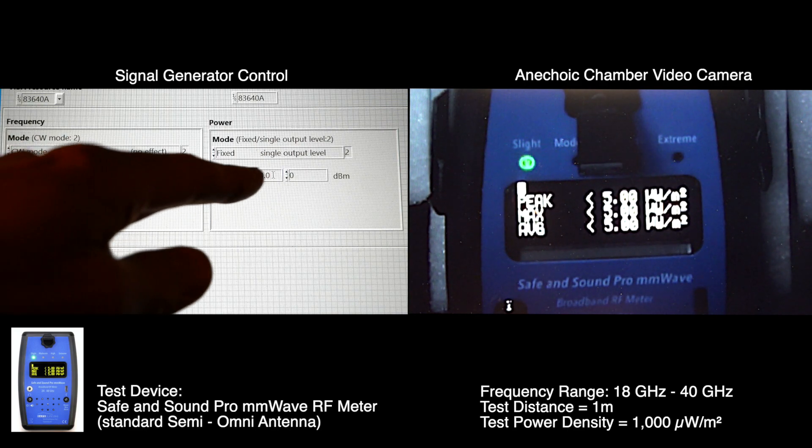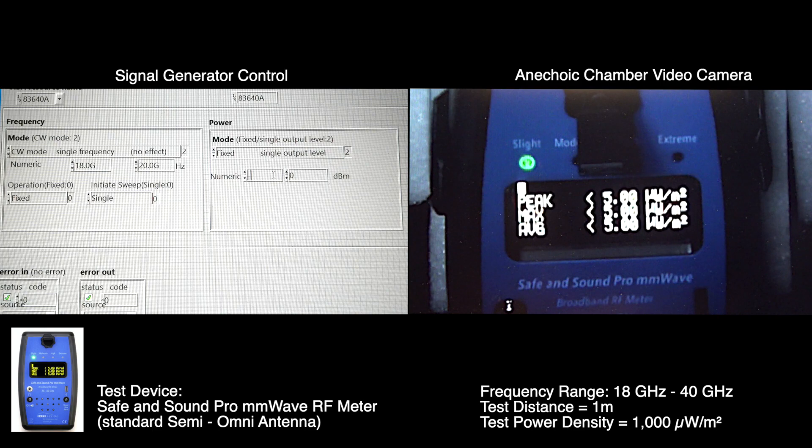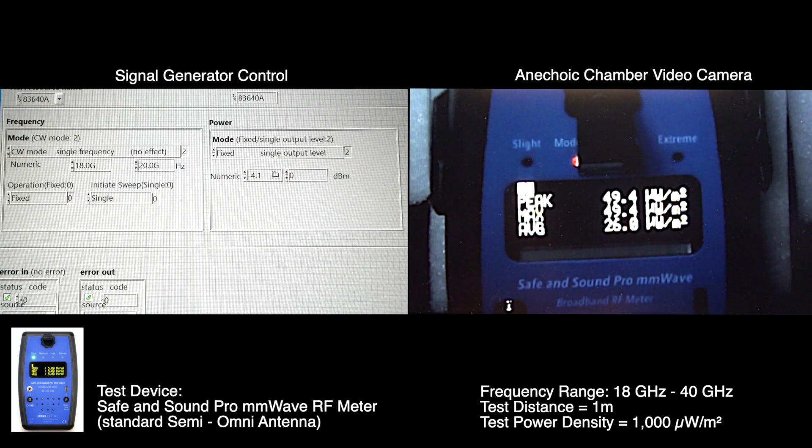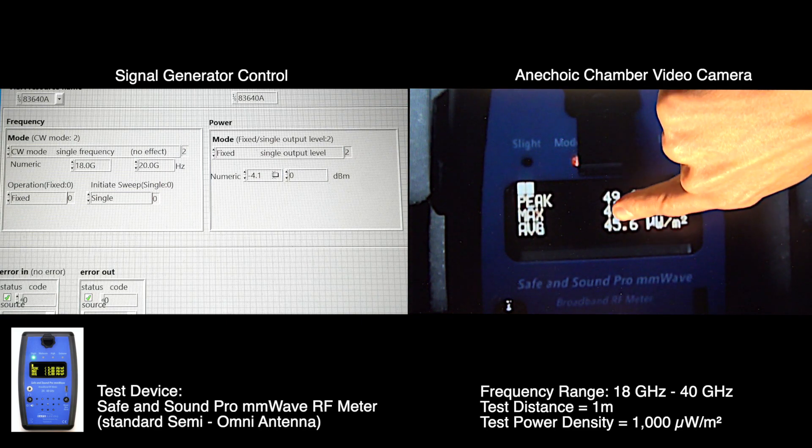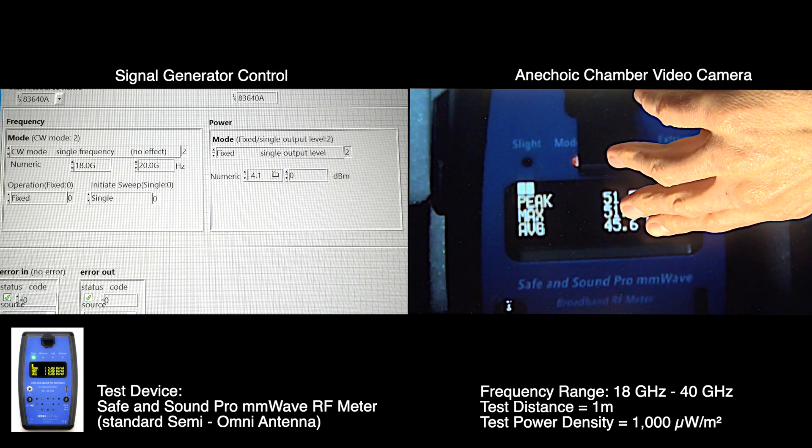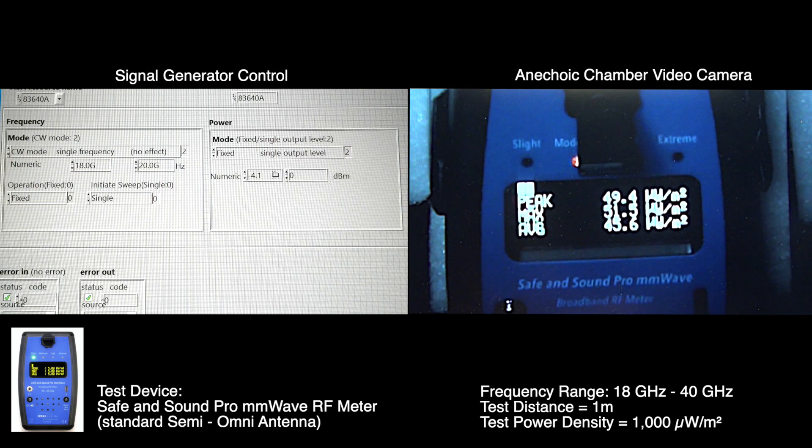I'm at 18 gigahertz and from previous calibration run with a calibrated power meter and a calibrated antenna I know that at 18 gigahertz I need to have a signal generator power of minus 4.1 dBm. So here it is. I turn on the transmitter and I'm going to look at the average for this test. Now again we're rating this meter from 20 to 40 gigahertz. So right now looking at average I'm at 45.6 microwatts per square meter.